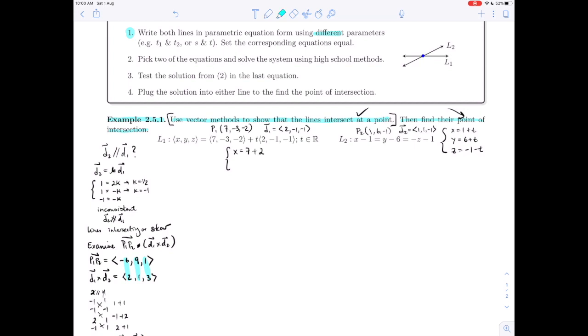Line one in parametric form: x = 7 + 2s, y = -3 - s, and z = -2 - s. I've used different parameters: t for line two and s for line one. I've written both of them in parametric equation form, and now we're supposed to set the corresponding equations equal. In other words: 7 + 2s = 1 + t, -3 - s = 6 + t, and -2 - s = -1 - t. So there is a system of equations, and we have done the first part of the method.